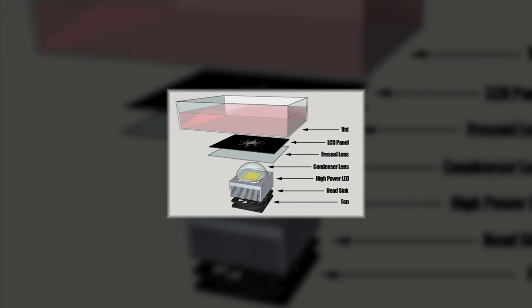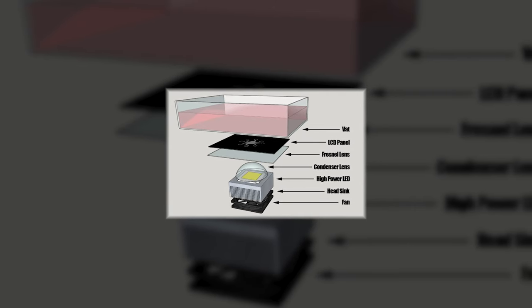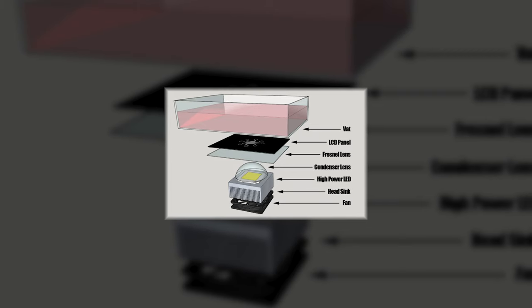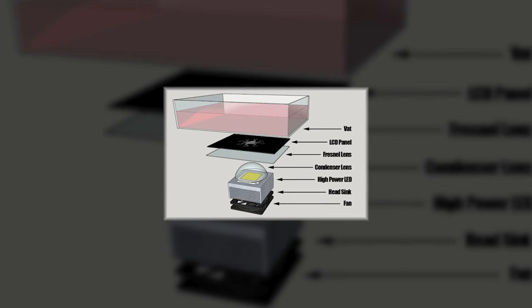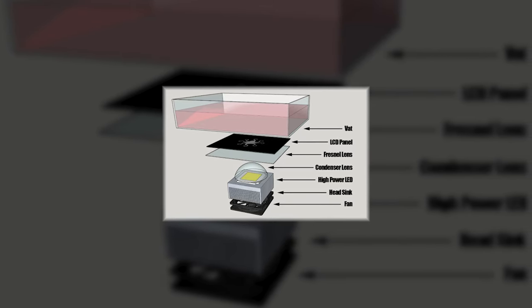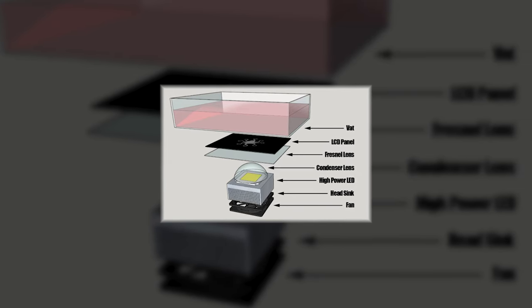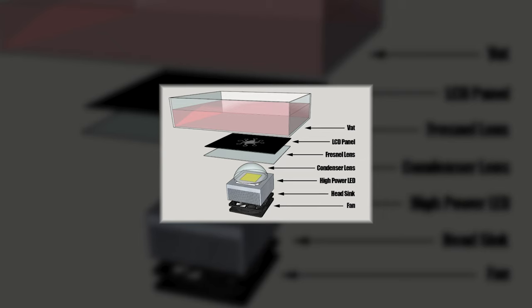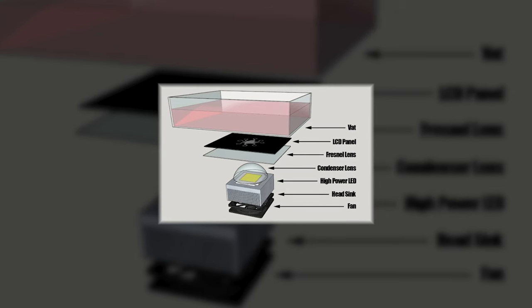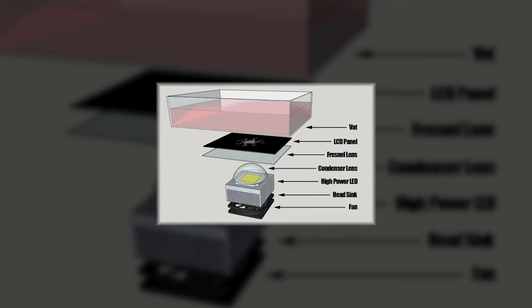LCD 3D printing technology makes printing 3D models even simpler. With this technology, a powerful LED lamp, which is reinforced by a lens system, shines on an LCD matrix. The matrix then projects the desired image onto a bath with resin, where the 3D model is formed.